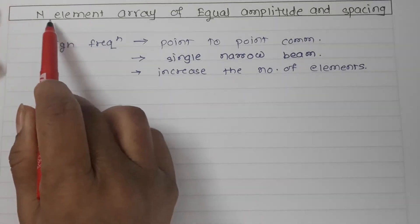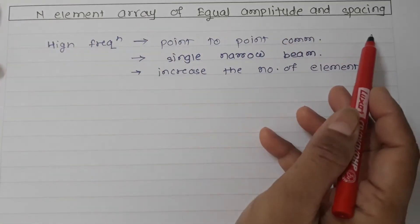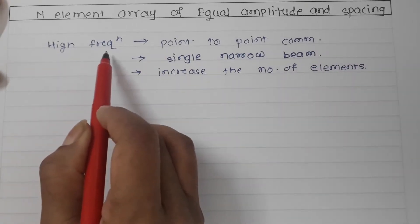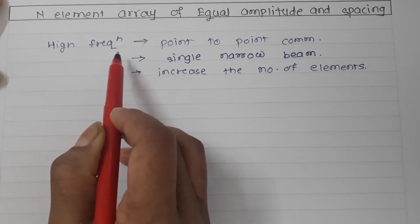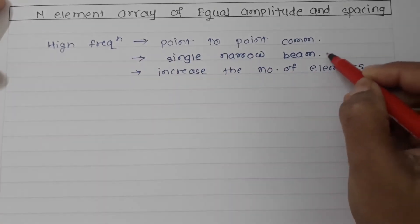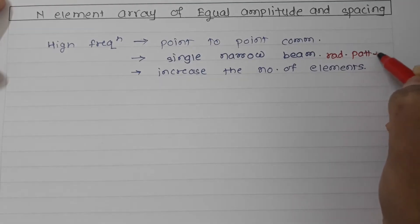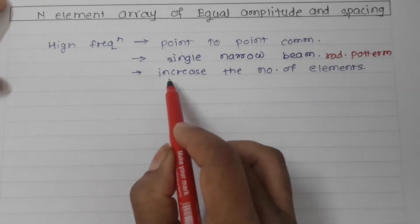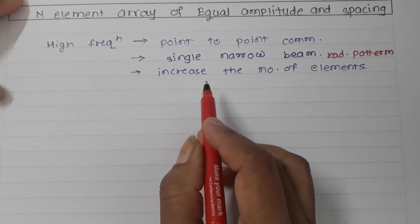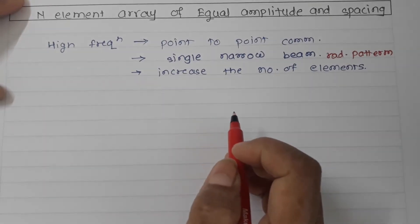In today's session we are going to talk about the N-element array of equal amplitude and spacing. When using a very high frequency for point-to-point communication, we require a single narrow beam of radiation pattern, which cannot be achieved by only two elements. That's why we need to increase the number of elements.